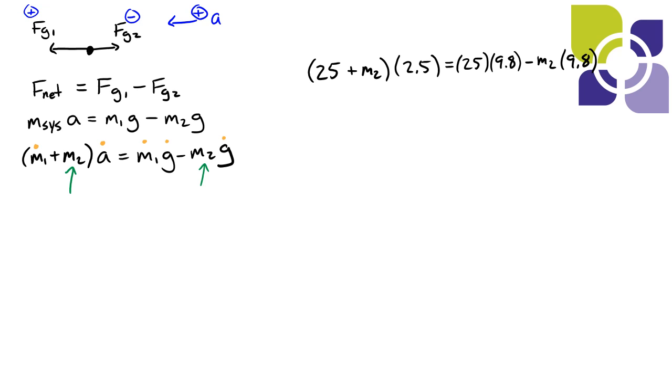Now we can start to see how we're going to get m2 we're going to have to bring them together somehow. So I'm going to multiply this 2.5 into the brackets here on the left so 2.5 times 25 gives me 62.5. 2.5 times m2 is just that 2.5 times m2 if we don't know what m2 is then that's as far as we can go. Now 25 times 9.8 is 245 minus 9.8 m2.